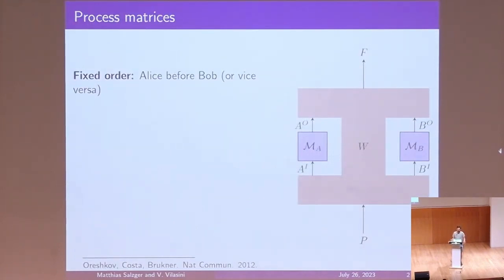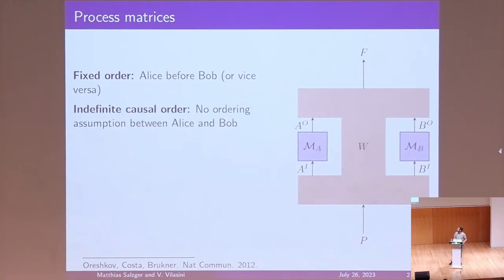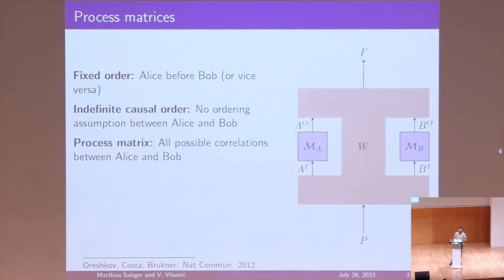Usually in quantum mechanics you think of some kind of fixed order — we have a circuit where Alice acts before Bob, with gates applied in sequence. The idea of indefinite causal order is that we drop this assumption and do not assume any kind of ordering between Alice or Bob. We then take all possible correlations that give us reasonable probabilities — nothing like a probability of minus one. This is what is called a process matrix.